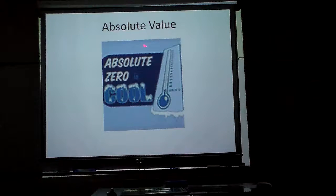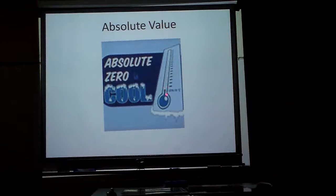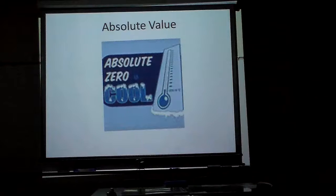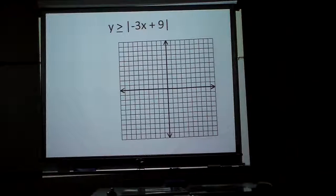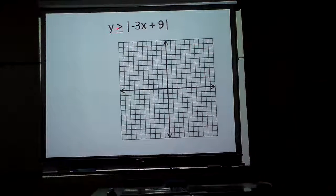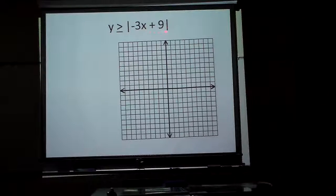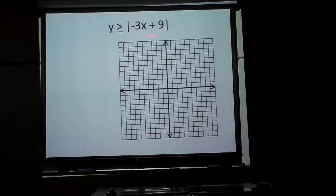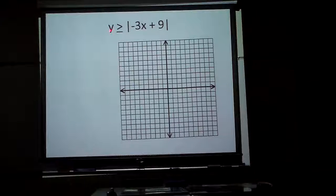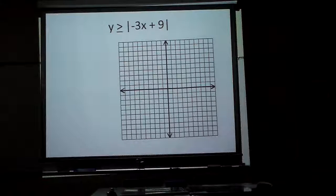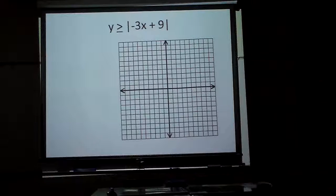Absolute value. Remember, absolute value will have no values less than 0. So first off, let's graph this one here. Now notice, the y is on the left, and it says it's greater than or equal to this value right here, meaning this is going to be smaller than our y value. Okay, or equal to.